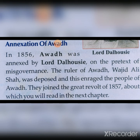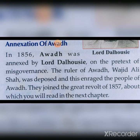It was said that the Nawab of Awadh was not able to govern Awadh properly, so Awadh was taken from him. The ruler of Awadh, Wajid Ali Shah, was deposed — meaning removed from his position. This enraged the people of Awadh, and they joined the Great Revolt of 1857, which you will read in the next chapter.